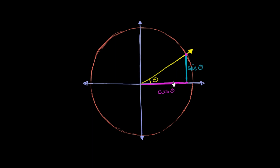And this makes sense. This actually shows why the unit circle definition is an extension of the SOHCAHTOA definition. Remember, SOHCAHTOA tells us sine is opposite over hypotenuse. So if I want to do the sine of theta, what's it going to be?